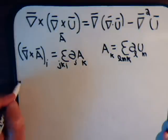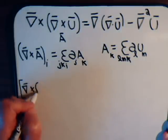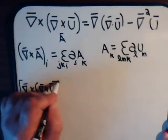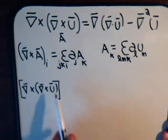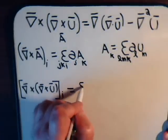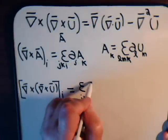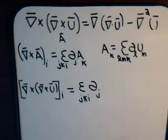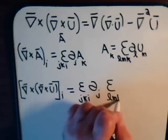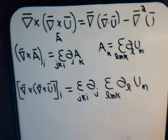So where we stand right now is, we have an expression for the i-th component of this. Del cross a, a is this, the i-th component equals epsilon j k i, partial j, times a k, but a k is this. So we have epsilon l m k, partial of l, u sub m.